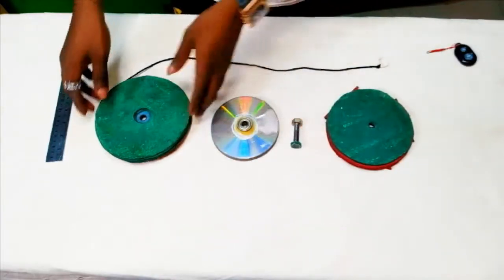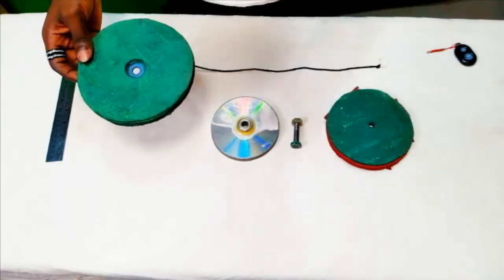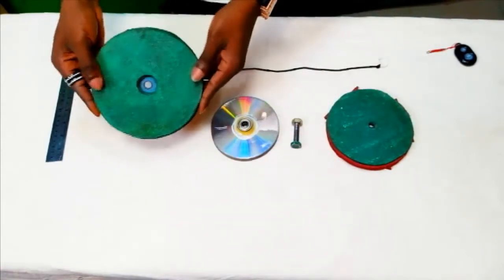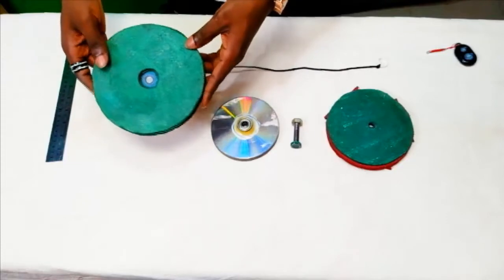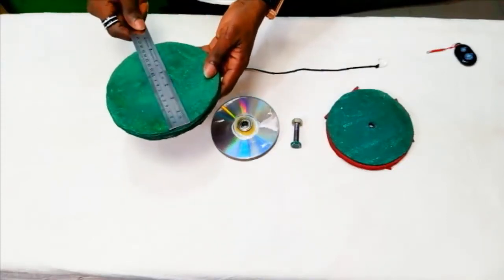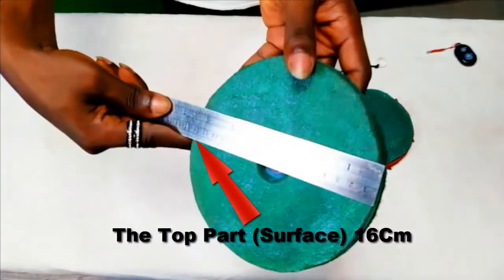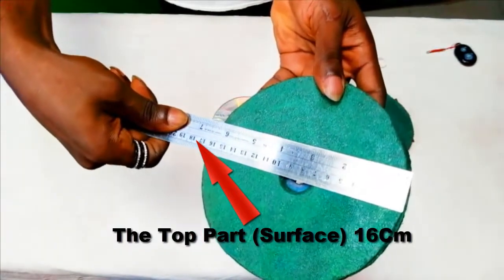Then lastly, this is the top part. So this is the middle part, this is the lower part. This is the top part of this DIY project and this is also a saw board also. And I made it 16 cm in diameter. I hope you can see that.